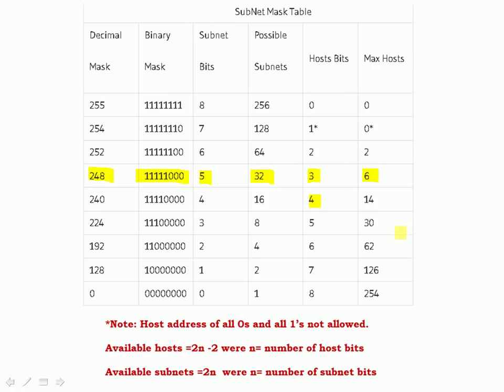We'll be referring back to this subnet mask table — it's very, very useful. It makes calculating between binary and decimal, and calculating the maximum number of hosts and subnets, much easier than doing it manually.